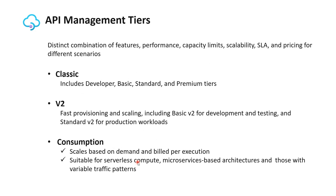API Management tiers represent a distinct combination of features, performance, capacity limits, scalability, SLA, and pricing for different scenarios. The tiers are grouped into Classic, v2, and Consumption. Classic includes the Developer, Basic, Standard, and Premium tiers. v2 is a new set of tiers offering fast provisioning and scaling, including Basic v2 for development and testing and Standard v2 for production workloads. The Consumption tier is a serverless gateway that scales based on demand and bills per execution.